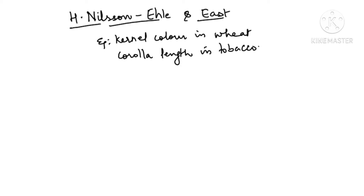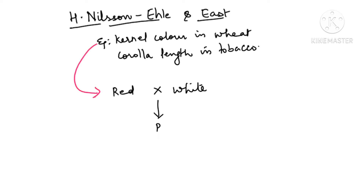Especially when they were working on kernel color in wheat, they observed that when red was crossed with white — when red grain was crossed with white grain — the F1 generation was red but intermediate only. Neither pure red, nor pink. But when this F1 was selfed, they observed five different phenotypes.